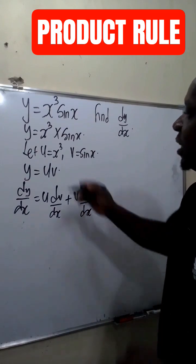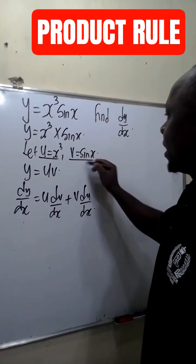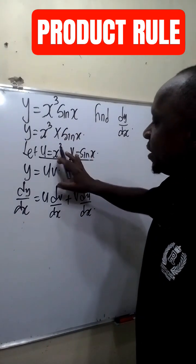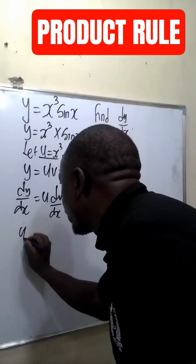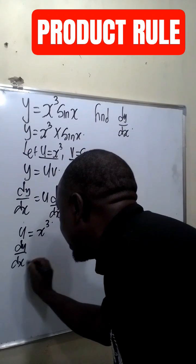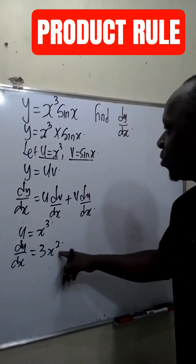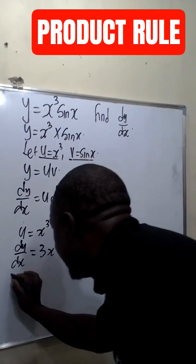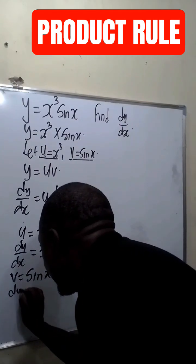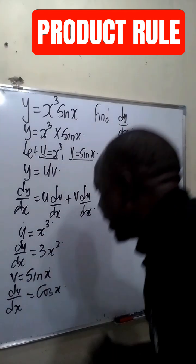Now this implies we are going to find the derivative of u equal to x raised to the power 3, and the derivative of v equal to sine x. If u is equal to x raised to the power 3, du/dx will be equal to 3x raised to the power 2. Also, if v is equal to sine x, dv/dx will be equal to cos x.